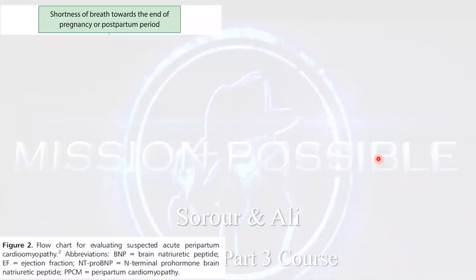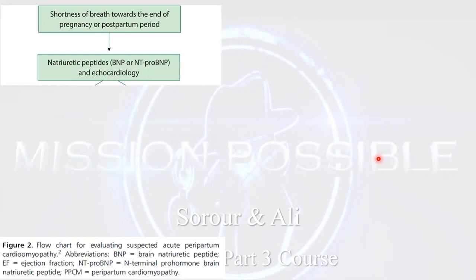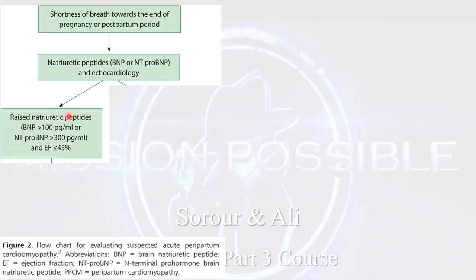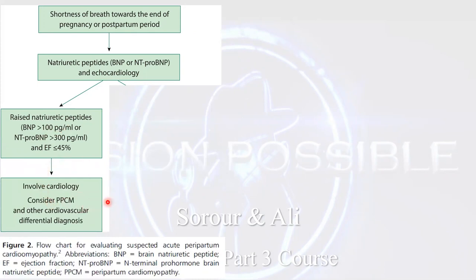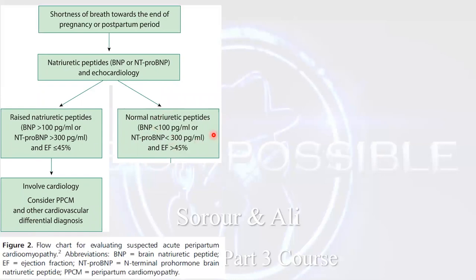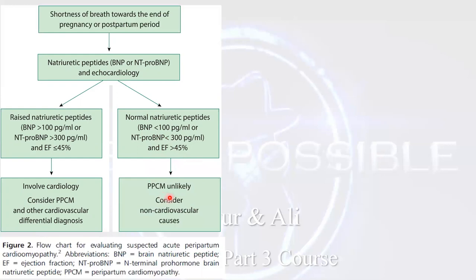The typical exam scenario will involve a lady with shortness of breath towards the end of pregnancy or in the postpartum period. You will do a natriuretic peptide and echocardiography. If the natriuretic peptide is increased and the ejection fraction is less than 45%, you must involve the cardiologist and consider peripartum cardiomyopathy or other cardiovascular differential diagnoses. After exclusion of other causes, you confirm the diagnosis of peripartum cardiomyopathy. This is a flowchart approach for shortness of breath at the end of pregnancy or in the postpartum period.